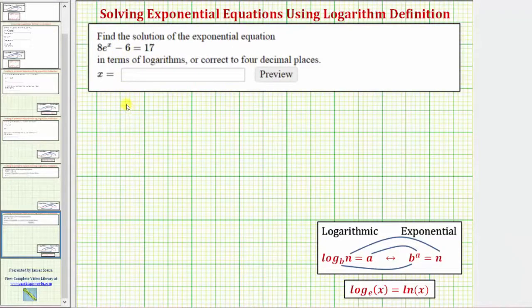We want to solve the exponential equation 8e^x - 6 = 17. The first step is to isolate the exponential part of the equation, which means we want to isolate e^x. Let's first add six to both sides of the equation.